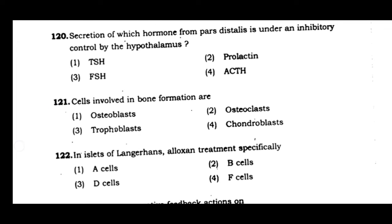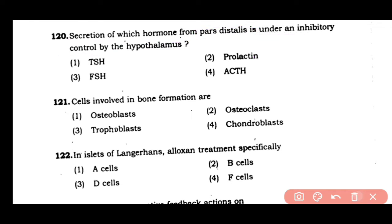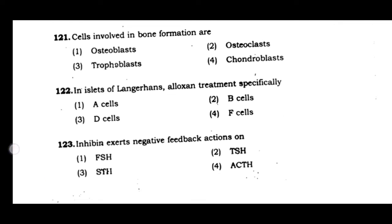Question number 120: The secretion of which hormone from the pars distalis is under inhibitory control by the hypothalamus? (1) TSH, (2) Prolactin, (3) FSH, (4) ACTH. The correct answer is option 2. The secretion of prolactin hormone from the pars distalis is controlled by somatostatin, which is an inhibitory factor released by the hypothalamus.